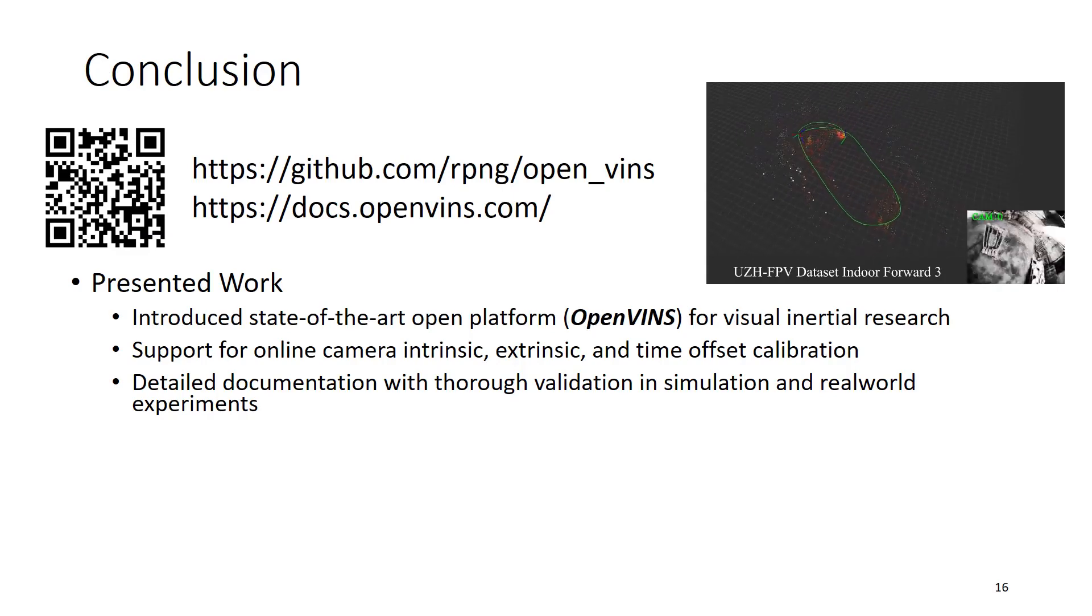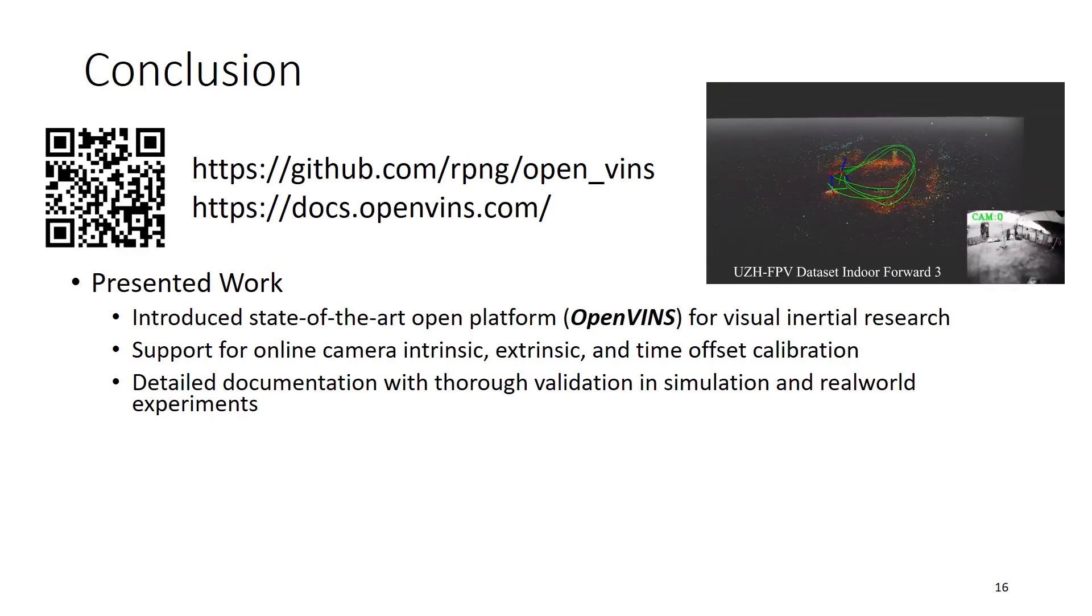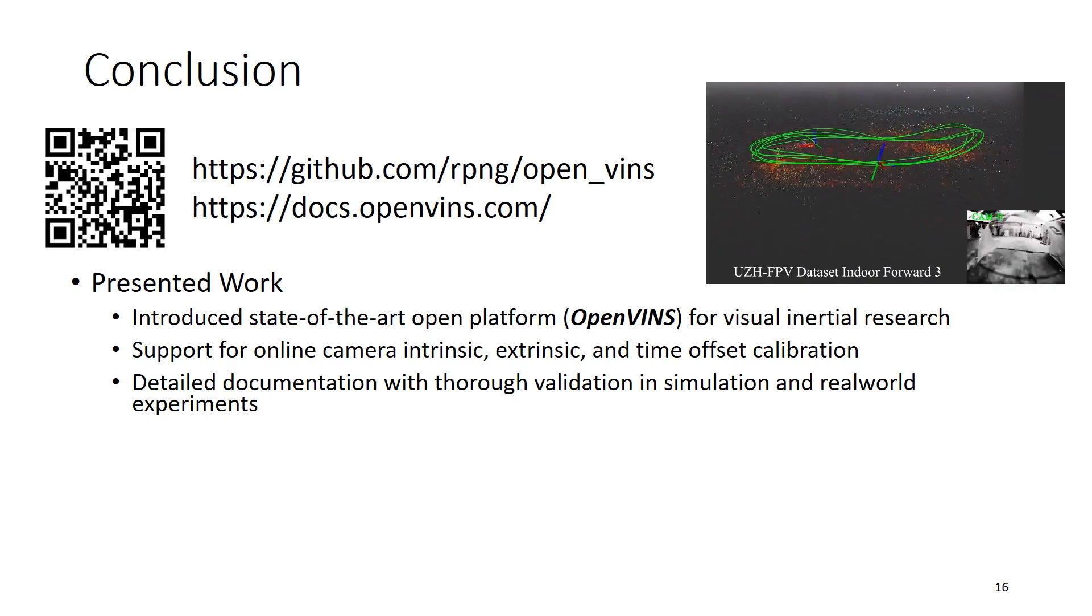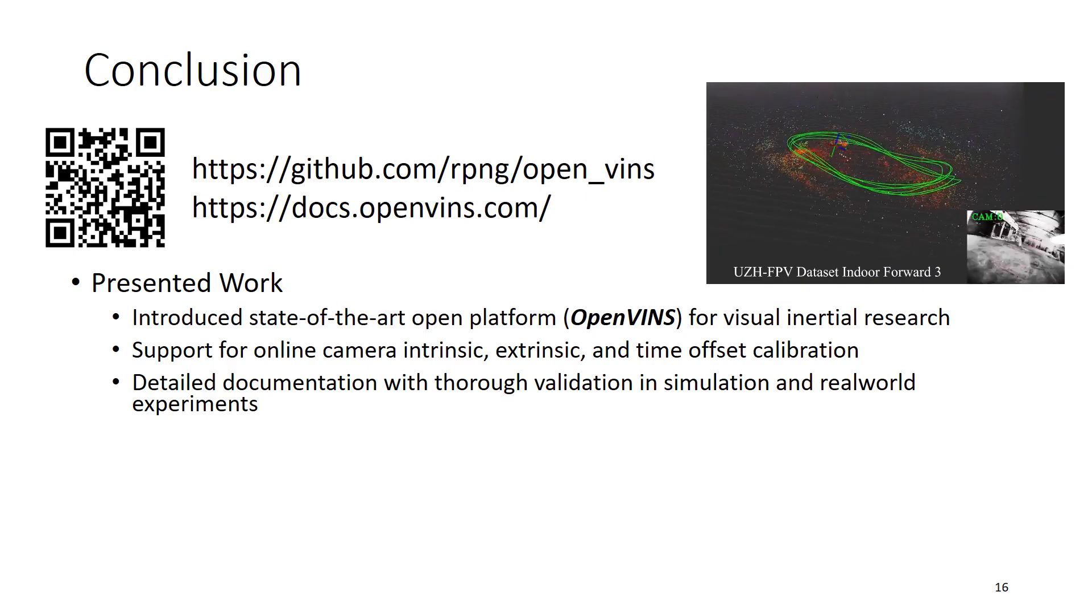In conclusion, we've introduced a state-of-the-art open framework termed OpenVINS for visual inertial research. We support online camera intrinsic, extrinsic, and time offset calibration. We have very detailed documentation website and thorough validation in simulation and real world experiments.